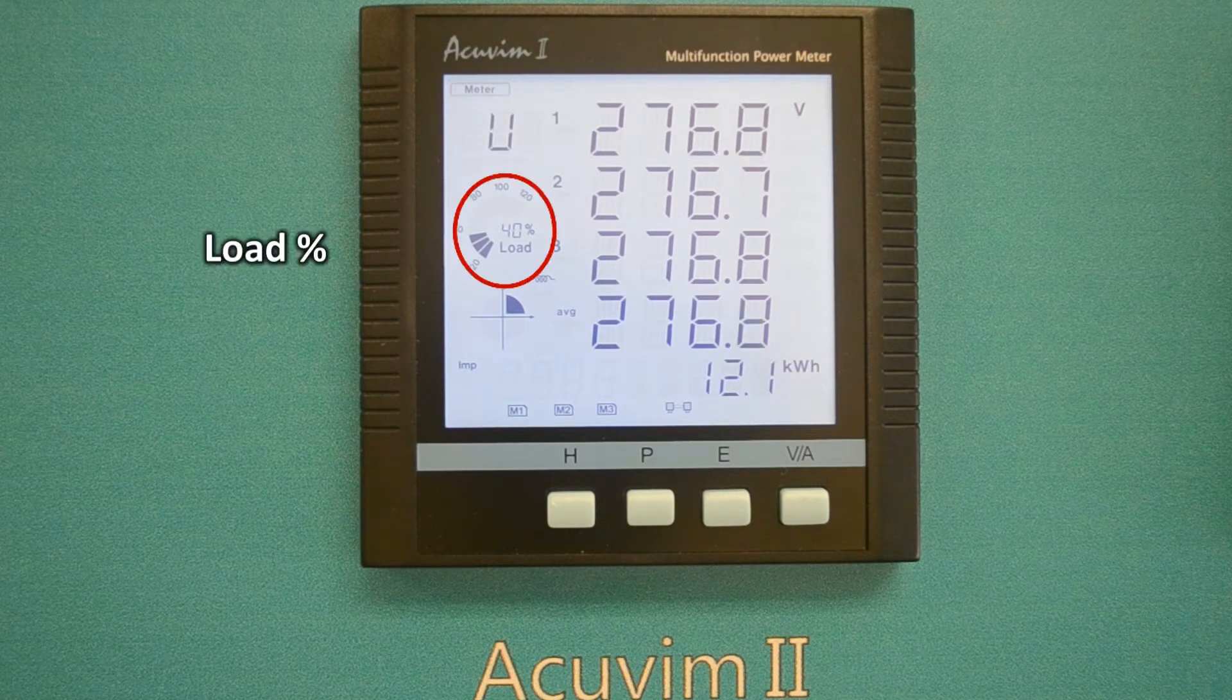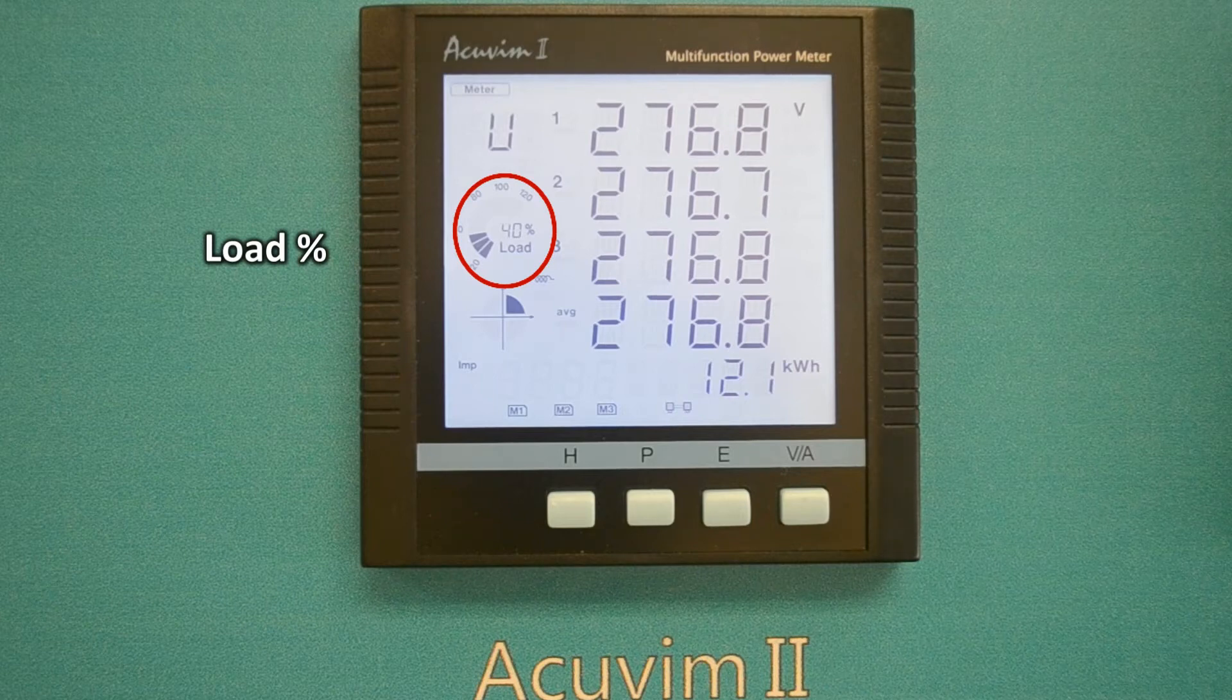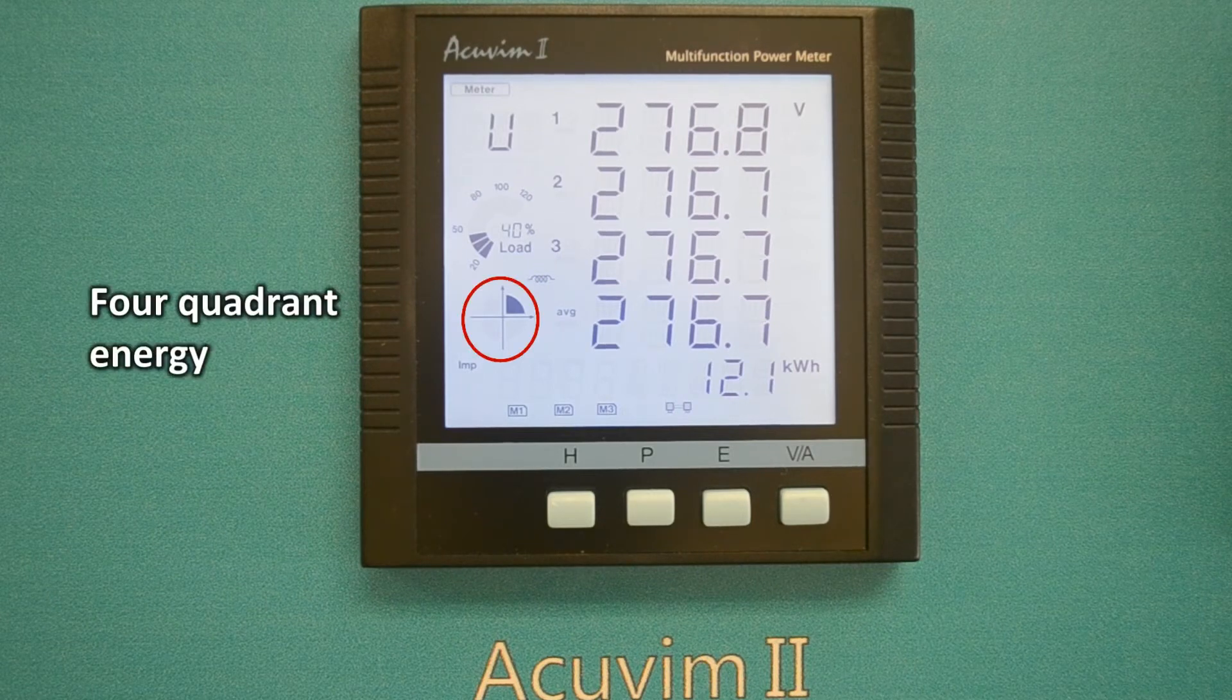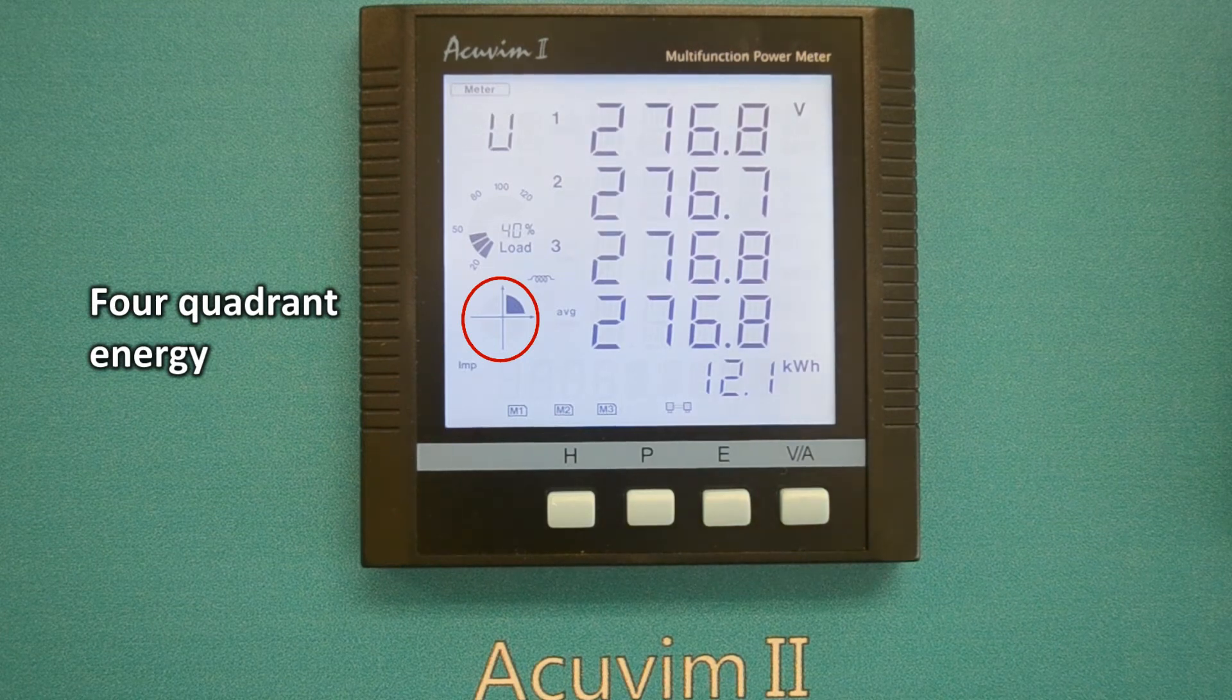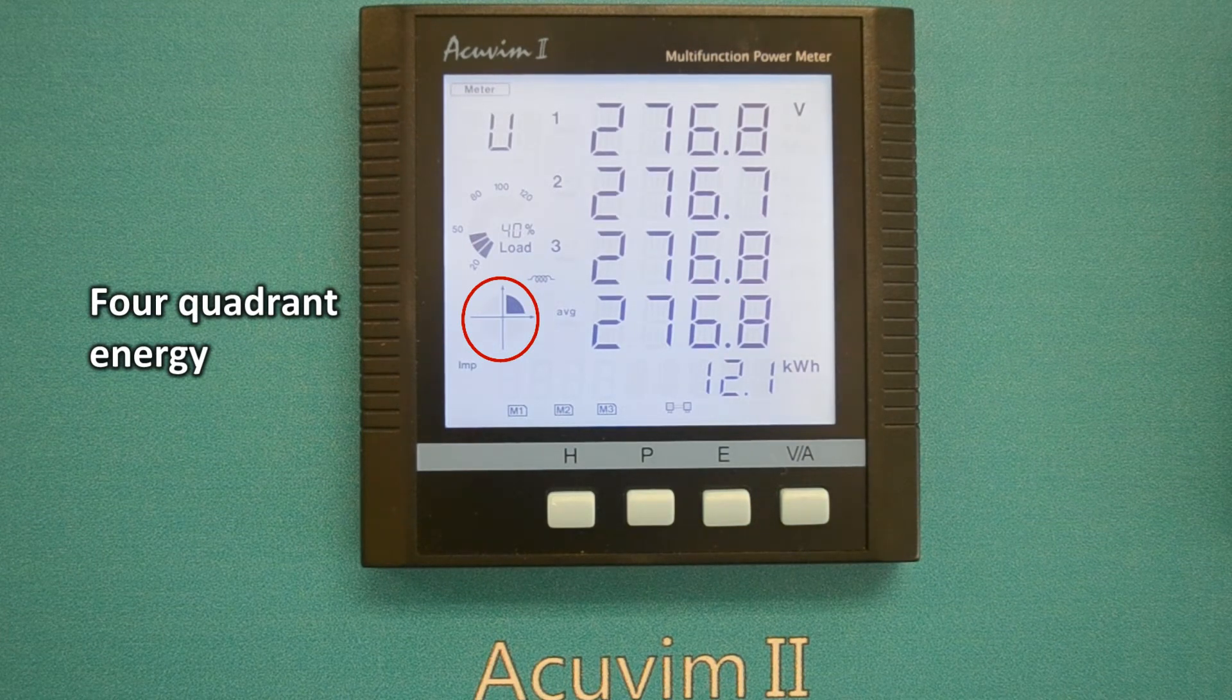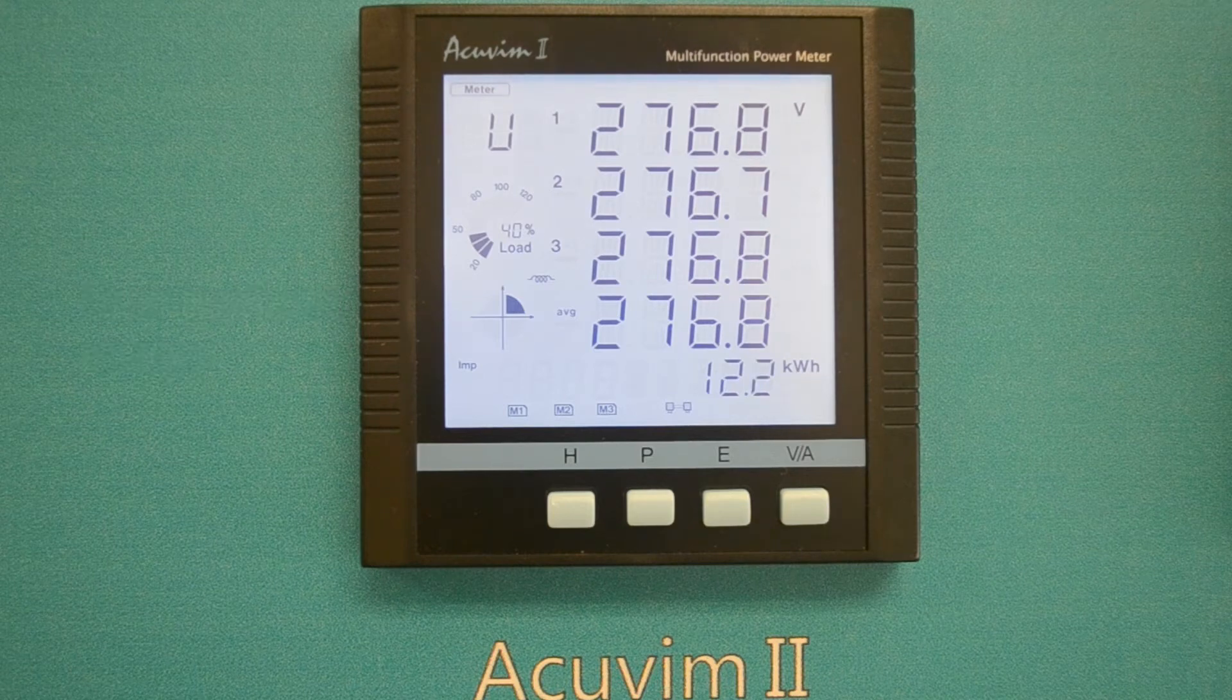The load percentage indicates the percentage of load current to nominal current. The four quadrant graphic displays four quadrant energy conditions. At the moment, the meter has lit the first quadrant, meaning the power factor is lagging.